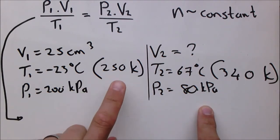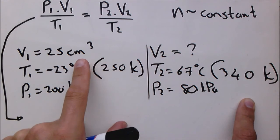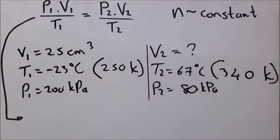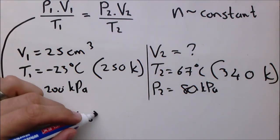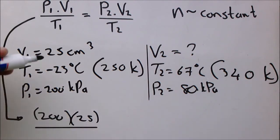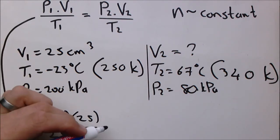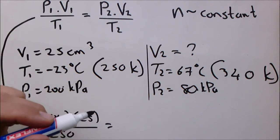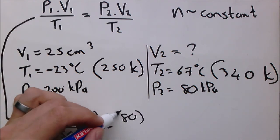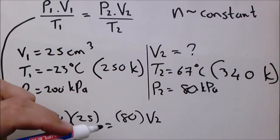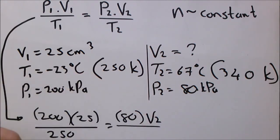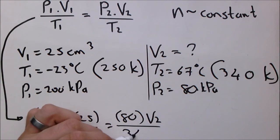Then from there on, you substitute what you have. Please take note all the units are the same: kilopascal, kilopascal, yes; Kelvin, Kelvin, yes; volume cubic centimeters, that means our answer will be in cubic centimeters as well. So after writing the first step, it's 200, that's P1. V1 is 25. T1 is 250. P2 is 80.